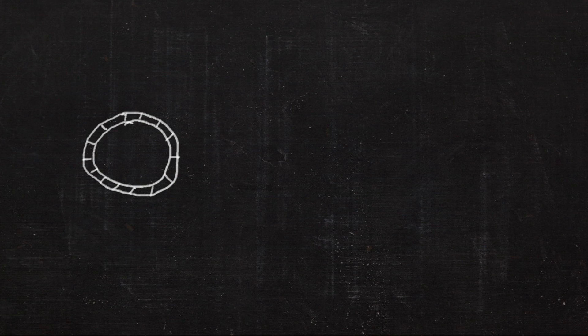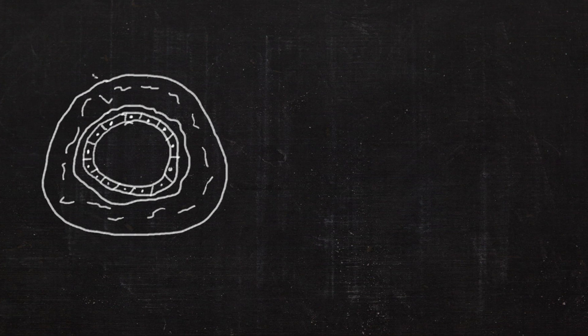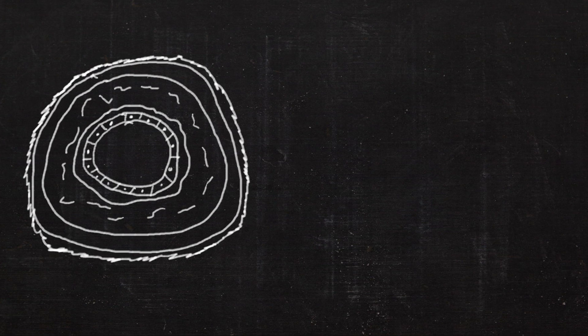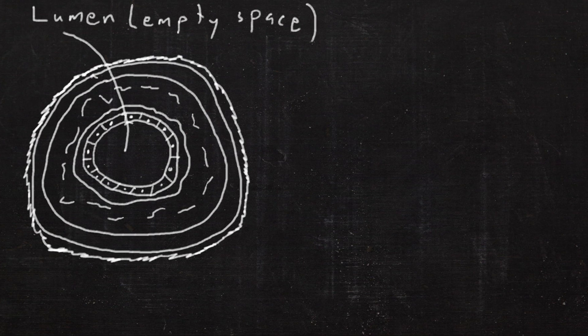To understand how vascular risk factors lead to vascular disease, we need to start with the anatomy of the artery. The very inside is called the lumen, which is where the blood goes.